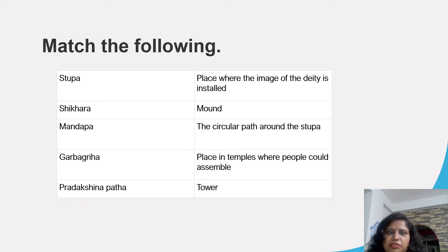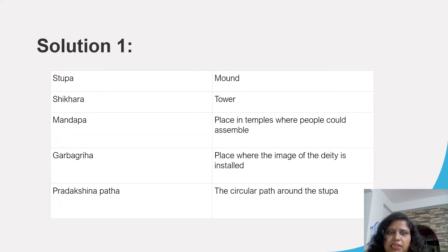This is the matching exercise. There are two columns — you can see the left-hand side and the right-hand side. Now the solution: Stupa is a mound. Shikhara is a tower. Mandabha is the place of the temple where people could assemble. Garbhagriha is the place where the image of the deity is installed. Pradakshinapath is the circular path around the stupa.